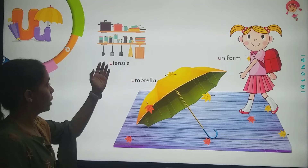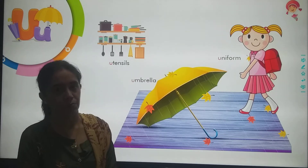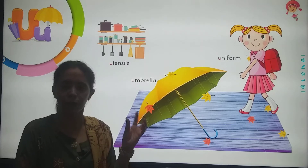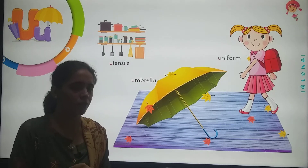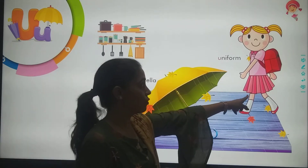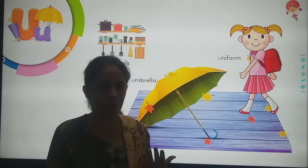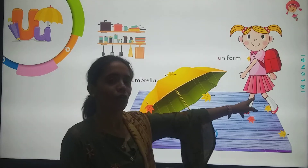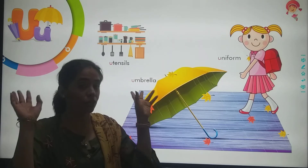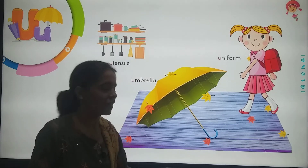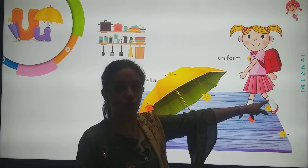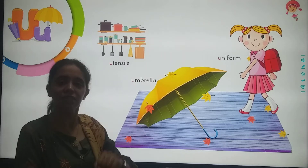U for Utensils. Utensils means the things we use to eat food — like if you eat food, you fill a little bit of food in them. So what are all these? Utensils! Then, Uniform. Have you seen your school uniform? Yes? Uniform. And U for Umbrella — what do we use? Umbrella! So: U for Utensils, U for Uniform, and U for Umbrella.